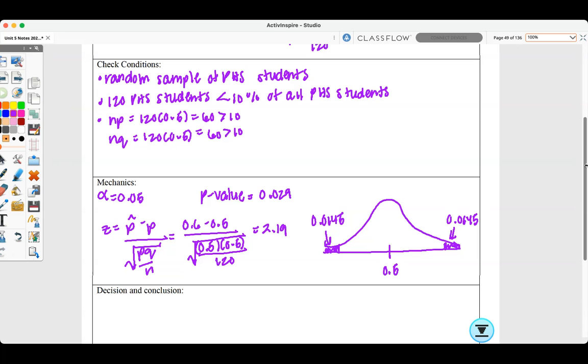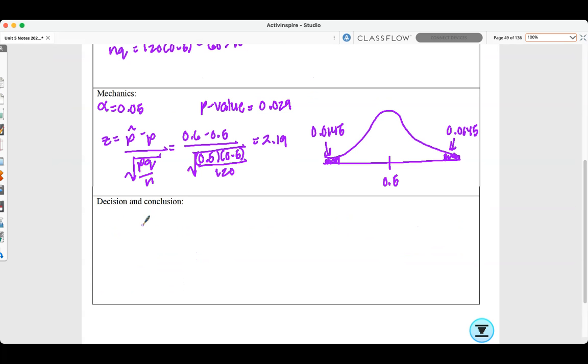So now we need to come up with a decision or conclusion based on our results. We need to compare that P value to the alpha level. And our P value is less than our significance level alpha because our P value is 0.029, which is less than 0.05. So we reject our null hypothesis. The sample provides convincing evidence that the proportion of PHS students who have never smoked a cigarette is not 0.05.